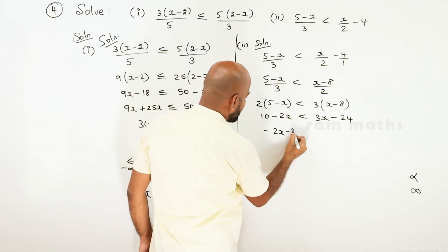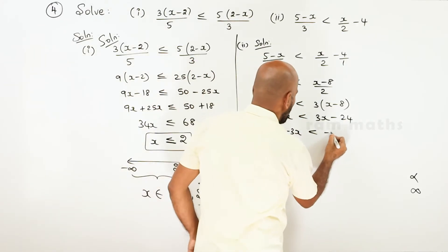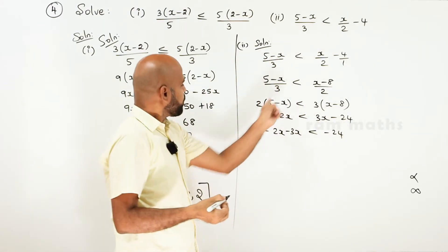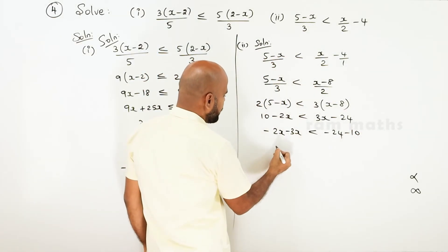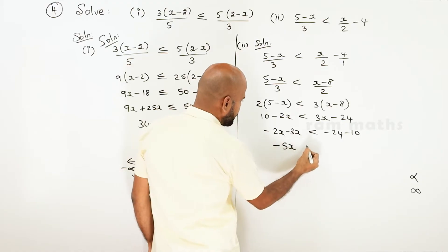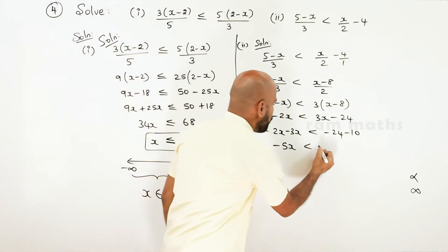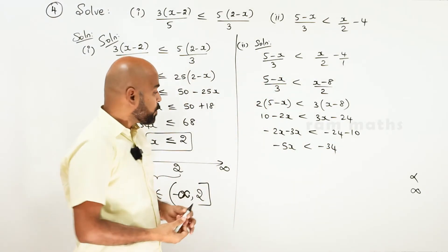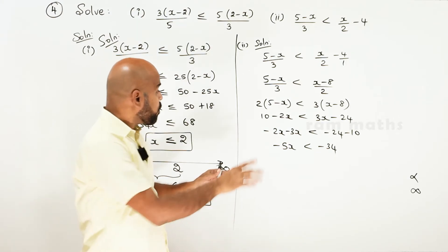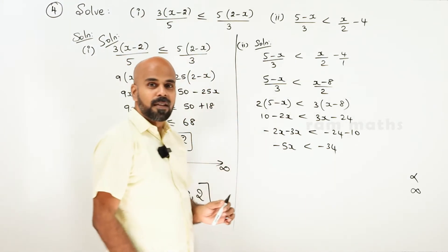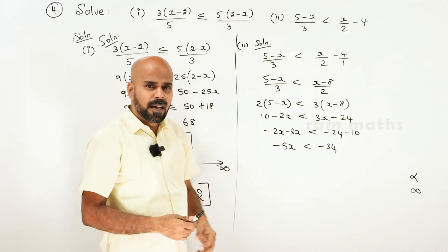3 into x is 3x, 3 into minus 8 is minus 24. Now x constants: minus 2x and minus 3x give minus 5x, less than minus 24 minus 10, which is minus 34.